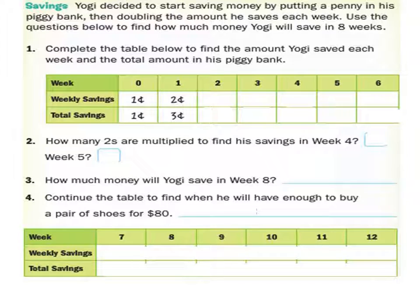Well, notice Yogi's saving, they're doubling the amount they save each week, right? So for week two, how much will they put into the bank?